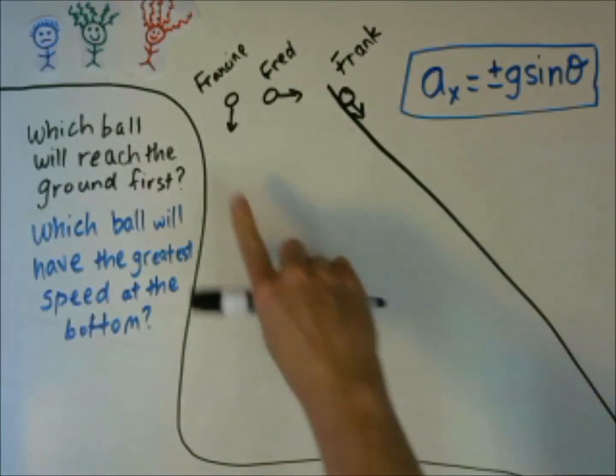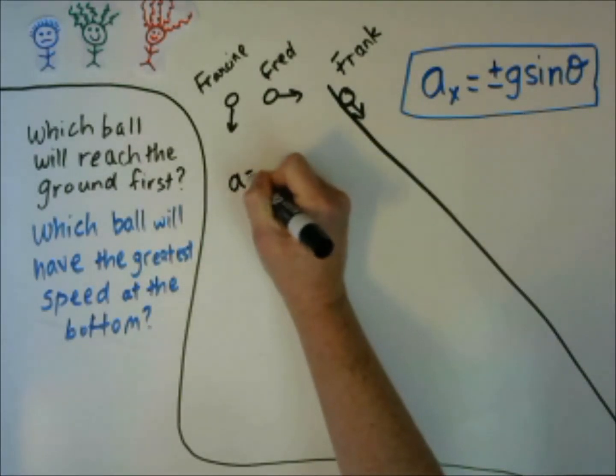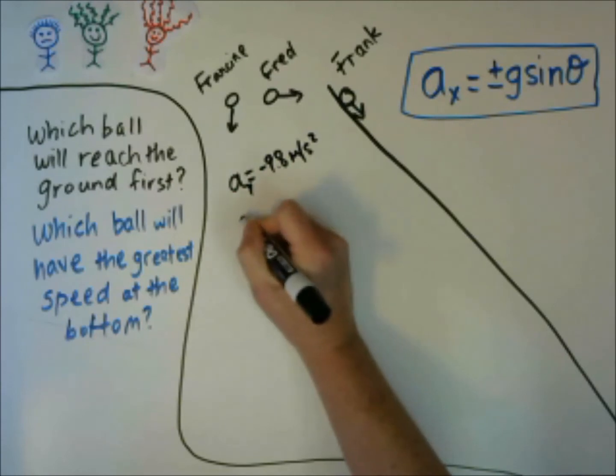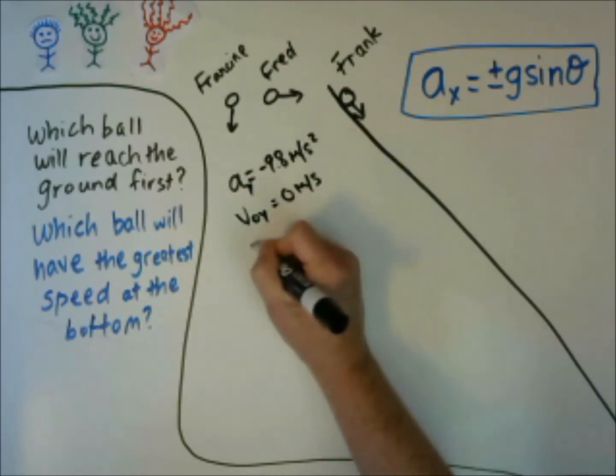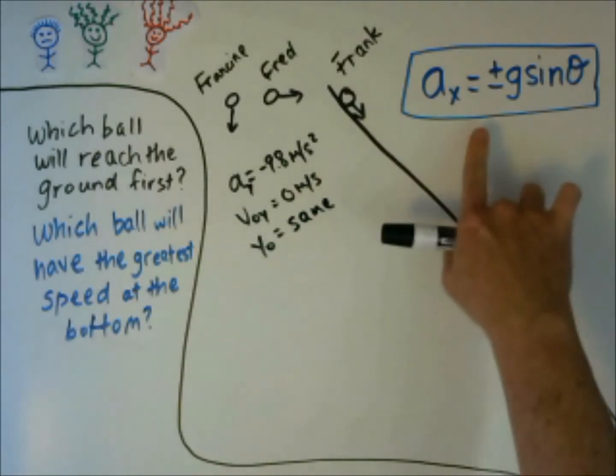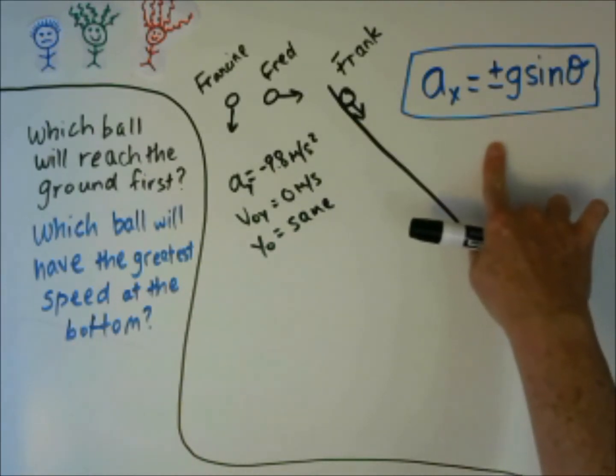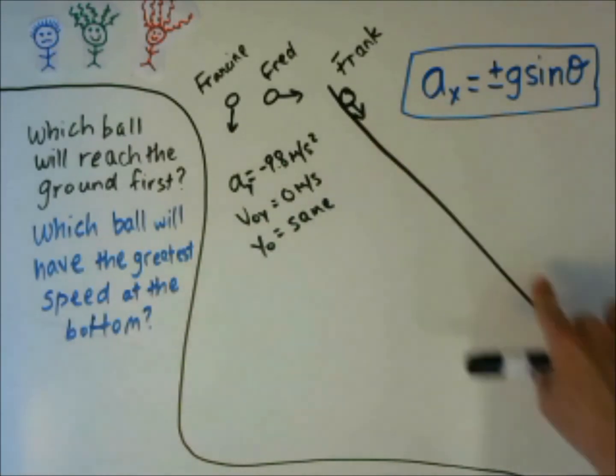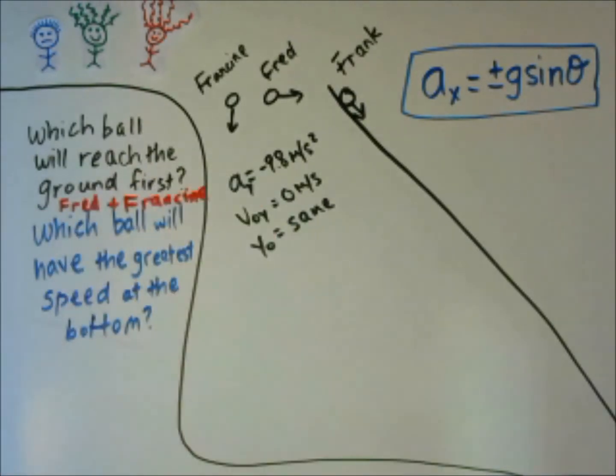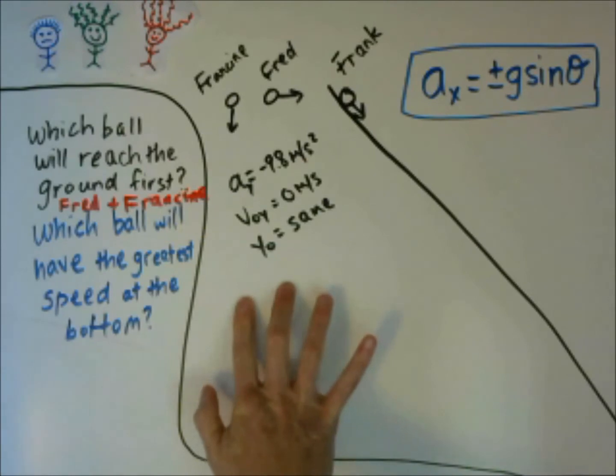Let's look back at our questions. We know that Francine and Fred's balls will hit the ground at the same time because they both have an acceleration of negative 9.8 meters per second squared. They both have an initial velocity of zero. And their initial y value is the same. For Frank, his acceleration is going to be the acceleration on an inclined plane, which will be less than negative 9.8 meters per second squared. So Frank's ball will take longer to reach the bottom. So for the first question, which ball will reach the ground first? The answer is Fred and Francine's ball will reach the ground first.